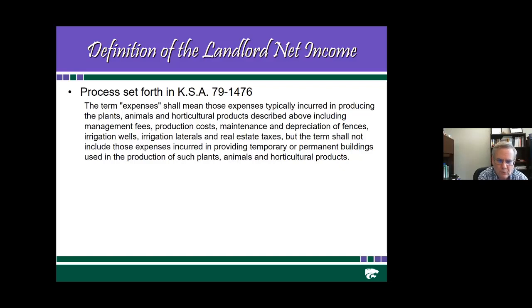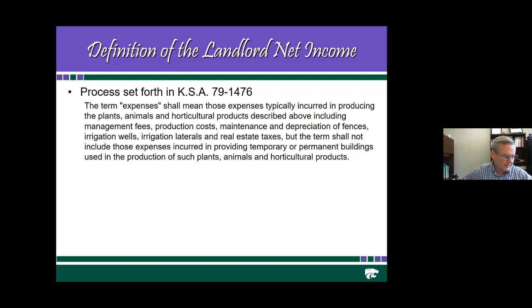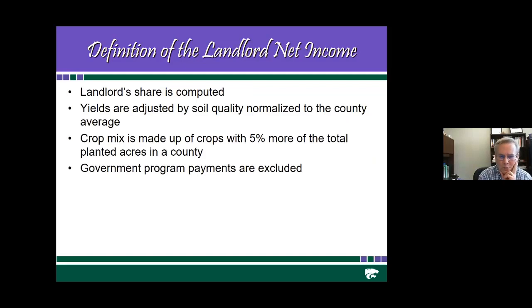If the land is irrigated, irrigation wells and irrigation laterals are subtracted. Real estate taxes are also deducted, so county real estate taxes are deducted from this. The formula should not include expenses for temporary or permanent buildings — any building aspect is excluded. The goal is to calculate the landlord's share, either starting with a cash rent for pasture or a net income approach — essentially a share rent approach for cropland and irrigated land.